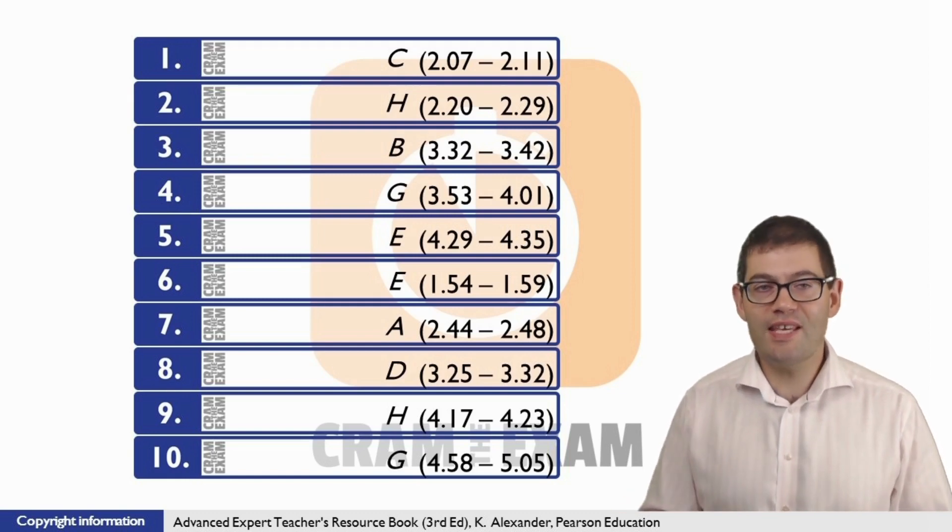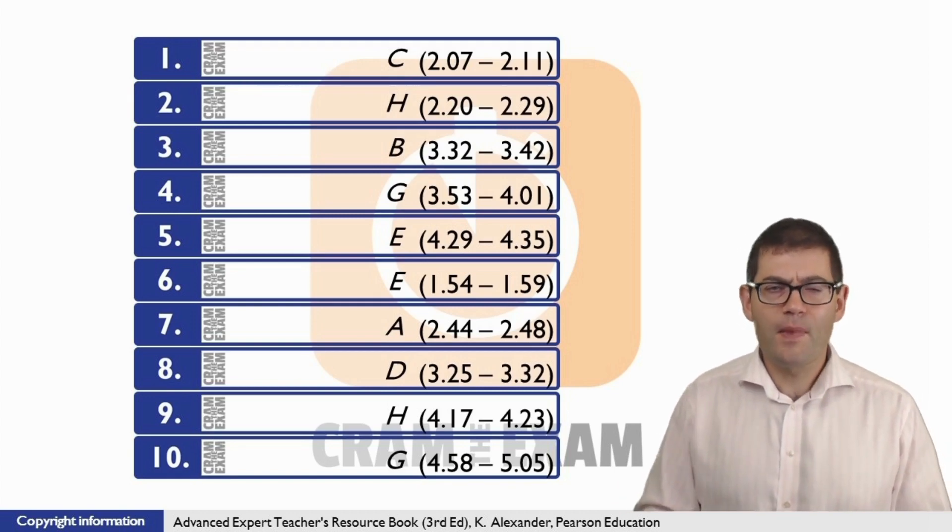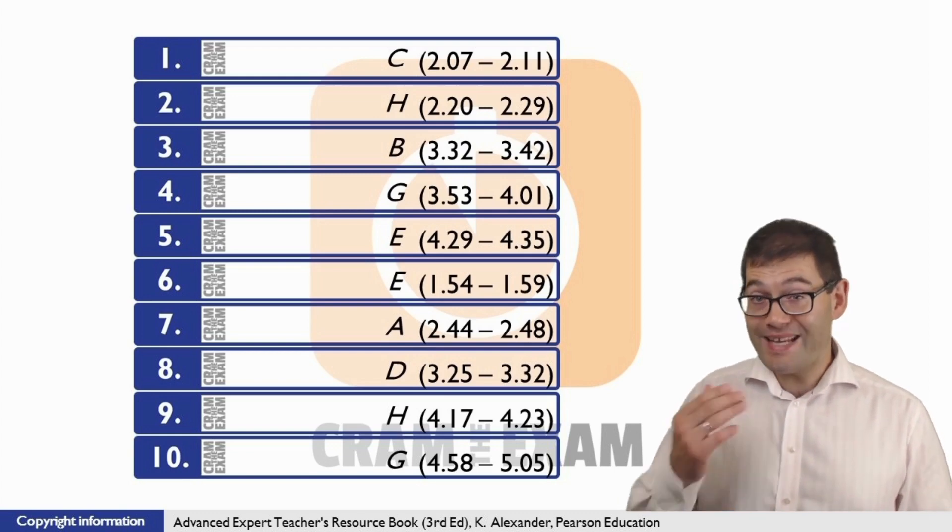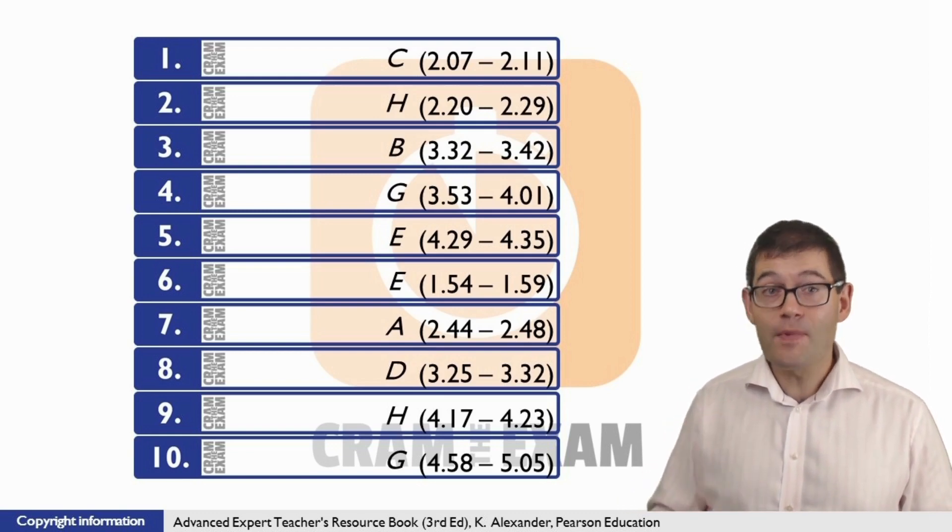For question six, the answer is E, the negative effect on others of being over-organized. Because speaker one says, my need to put everything in order drives my partner to distraction. Driving to distraction means that you're making someone else go crazy. So that's the vocab link to the negative effect.